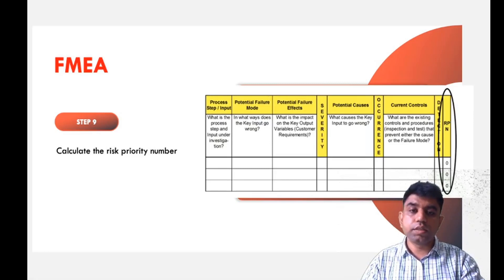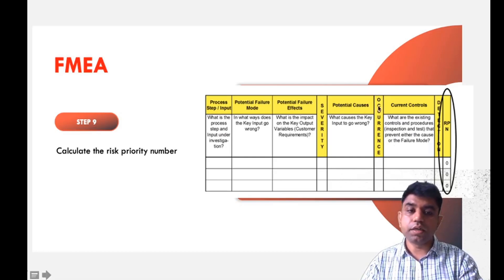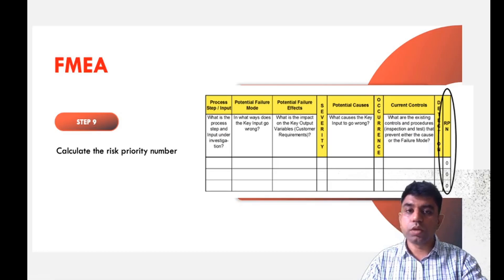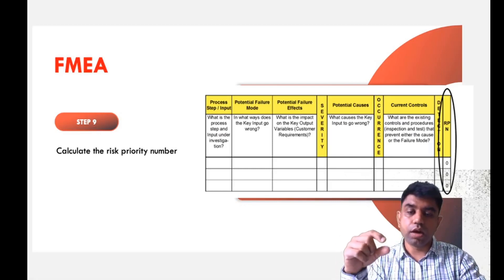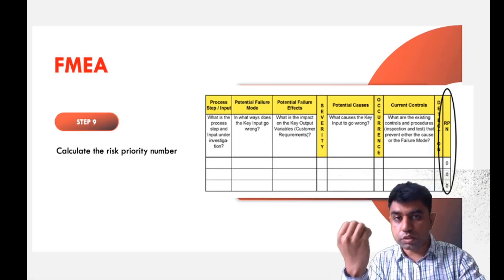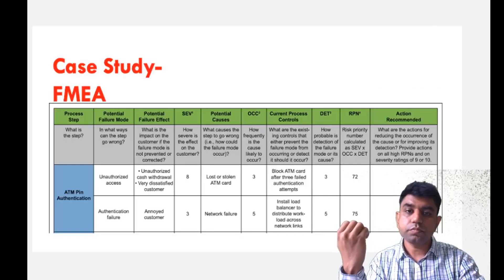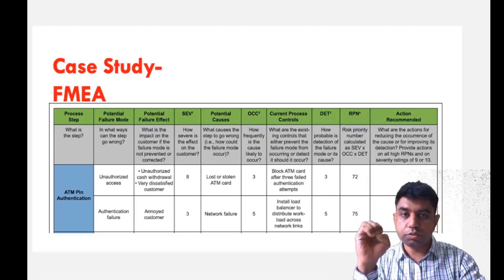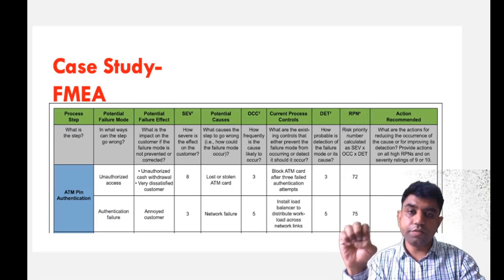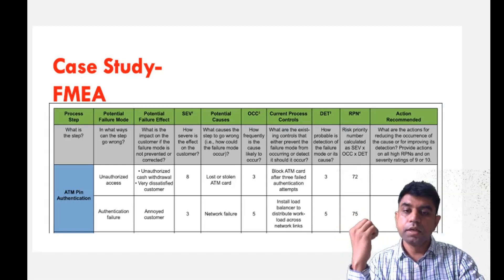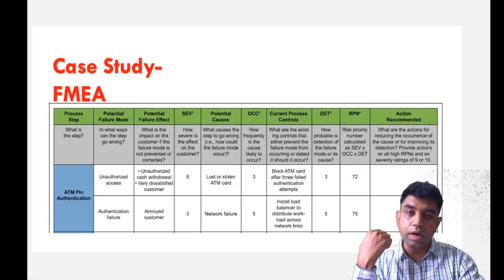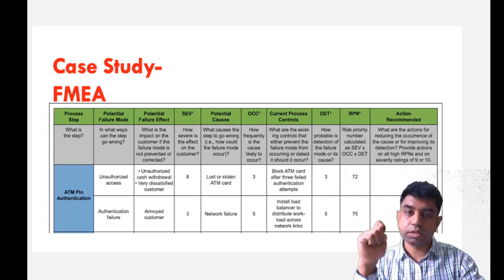Lastly, we calculate the Risk Priority Number. We multiply severity, occurrence, and detection to get the risk priority number. This helps us identify how risky the procedure is. Let us understand this with an example. FMEA is a kind of case study we do for any process or product manufacturing. I am taking an example you all have experienced so you can easily connect and understand the topic.